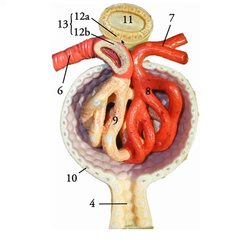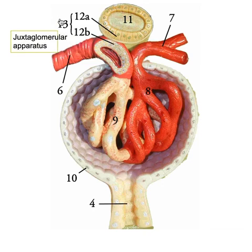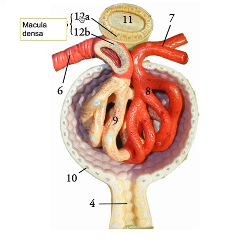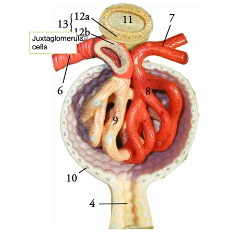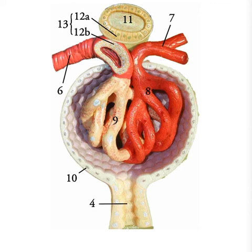These two structures work together, and when you study the physiology of the renin-angiotensin system and aldosterone function, you'll become really familiar with them as important mechanisms. Anatomically, they sit right next to each other, and collectively this is called the juxtaglomerular apparatus — made up of the macula densa cells and the juxtaglomerular cells. This is a really nice model that shows a lot of the details going on within the actual renal corpuscle.